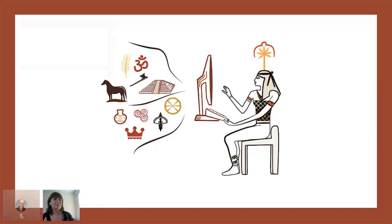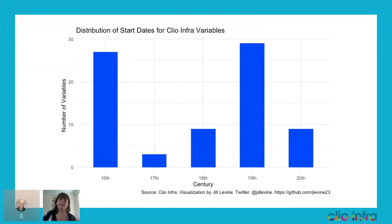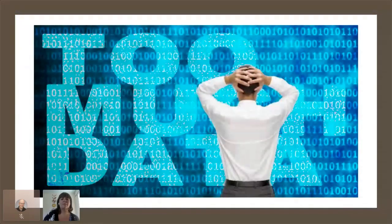Basically, my professor bosses come to me and say, 'Jill, we need all the pre-modern data we can find on XYZ topic,' and I go out and find it. One of the data sets I've worked with a lot recently is called Clio Infra. It's a really large historical data store with a huge range of data — from the number of cattle per capita, the number of libraries, the number of conflicts — and it covers the whole globe, going back to 1500 AD in some regions.